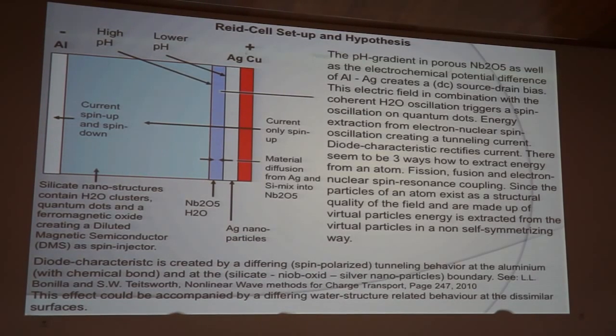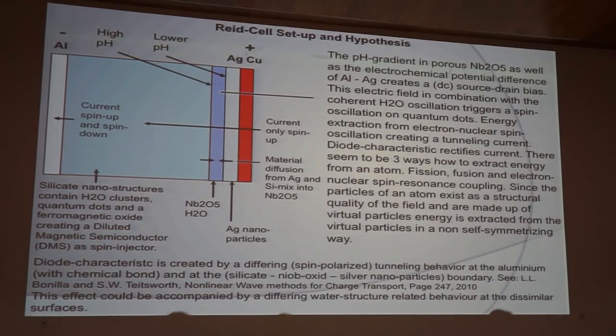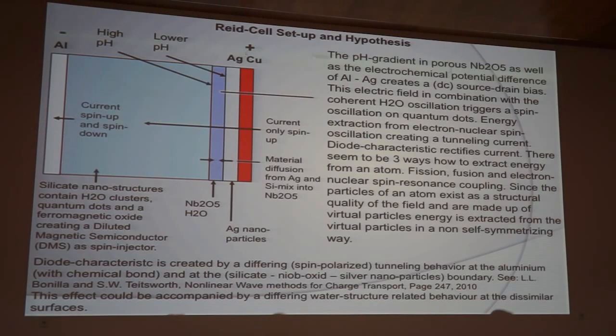This electric field in combination with the coherent water oscillation triggers a spin oscillation on quantum dots. Energy extraction from electron nuclear spin oscillation creating a tunneling current. The diode characteristic then rectifies the current. There seem to be three ways how to extract energy from an atom. Fission, fusion and electron nuclear spin resonance coupling. Since the particles of an atom exist as a structural quality of the field and are made up of virtual particles, energy is extracted from the virtual particles in a non-self-symmetrizing way. That's why I had this long introduction to point that out.